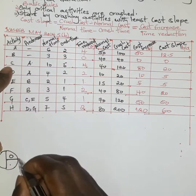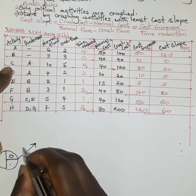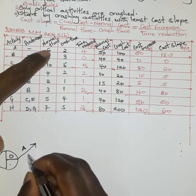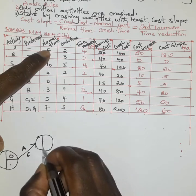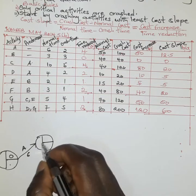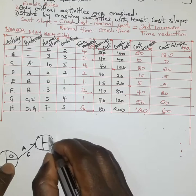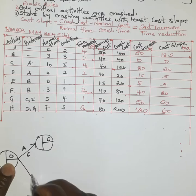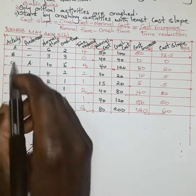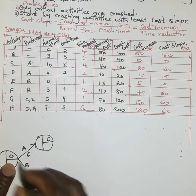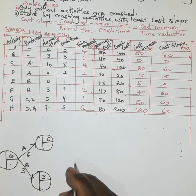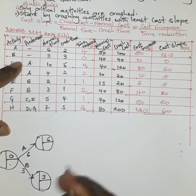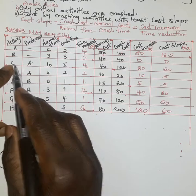Activities A and B both begin from the zero node. Activity A has a duration of six weeks, so it ends at node 0 + 6 = 6. Activity B takes a duration of three weeks, ending at 0 + 3 = 3.